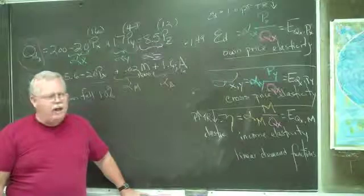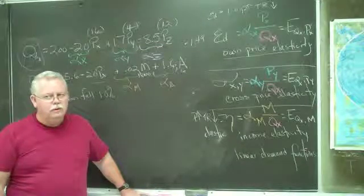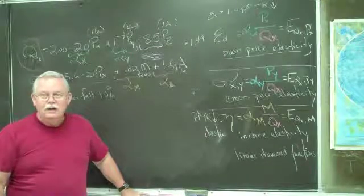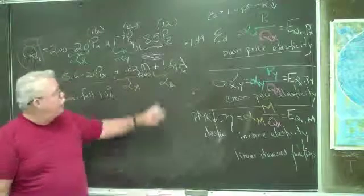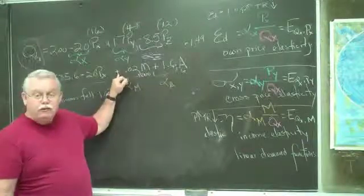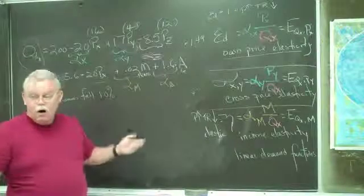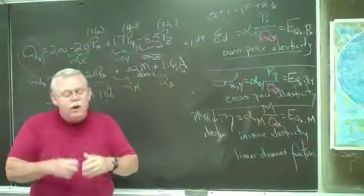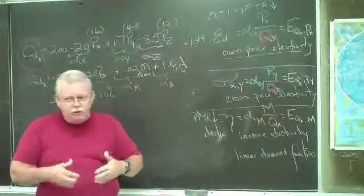Bad news. Why is it bad news? We're normal. It's bad news because we're selling a normal good. It has a positive coefficient. It's a normal good. If incomes fall, our sales are going to fall. Question. How much will our sales fall?